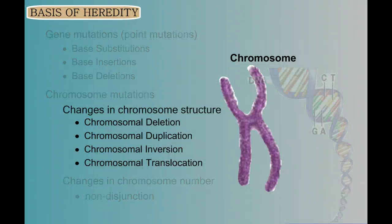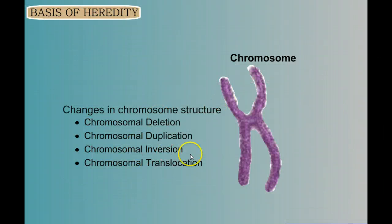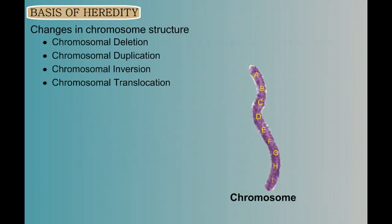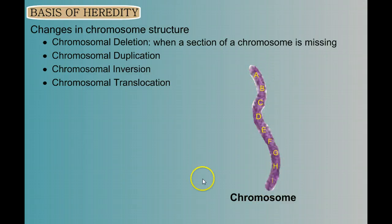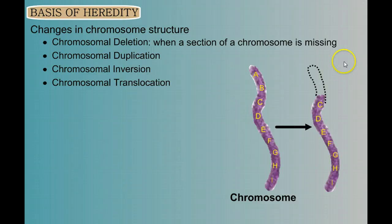Now let's move on to chromosome mutations, specifically changes in chromosome structure. We have deletion, duplication, inversion, and translocation. And we'll start with chromosomal deletion. It's when a section of a chromosome is missing. So we go from a chromosome that looks like this, and I put letters on here to represent different sections of genes along this chromosome. We have many genes on one chromosome. And for deletion, we've lost part of a chromosome.